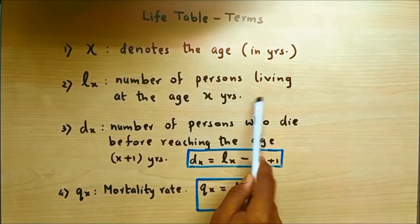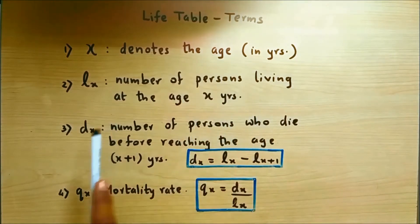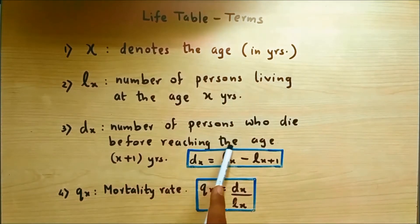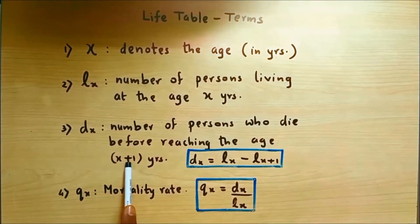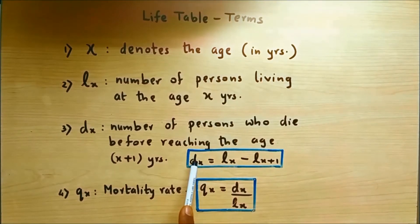The next column is DX. DX is the number of persons who died before reaching the age X plus 1 year, that is before their next birthday. DX is calculated as LX minus LX plus 1. So if you have to calculate D20, it would be L20 minus L21.